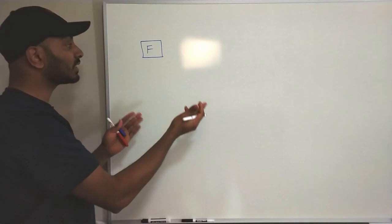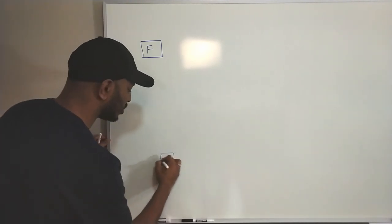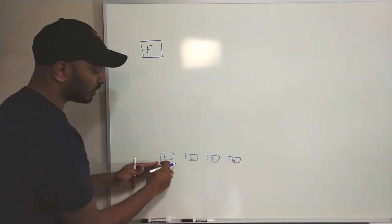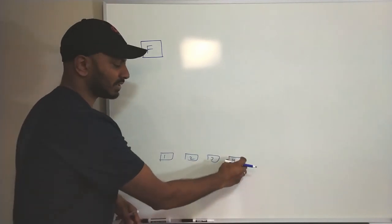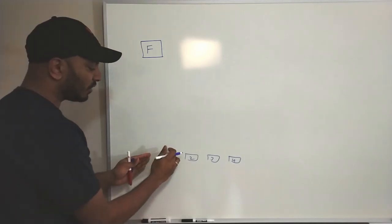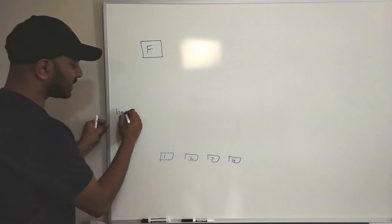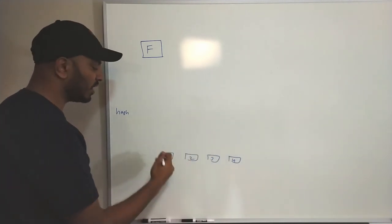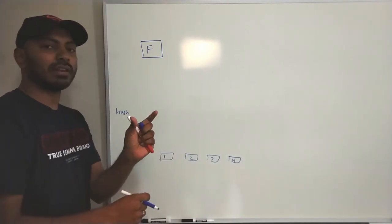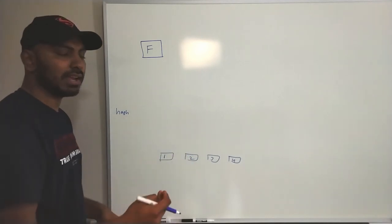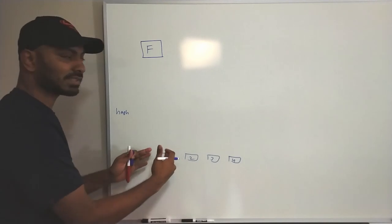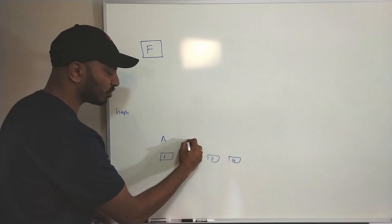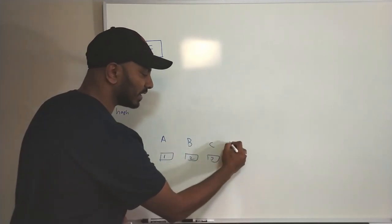Let's break this file into four different chunks: chunk 1, 2, 3, and 4, each of equal size - say 1 MB each. Now we apply a hash function to each chunk. Hash always produces equal-length output regardless of input size. For the sake of example, let's use simple notation: hash of chunk 1 gives 'a', hash of chunk 2 gives 'b', hash of chunk 3 gives 'c', and hash of chunk 4 gives 'd'. These are our leaf nodes.